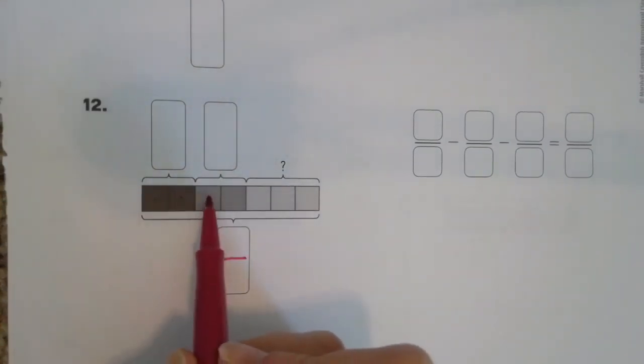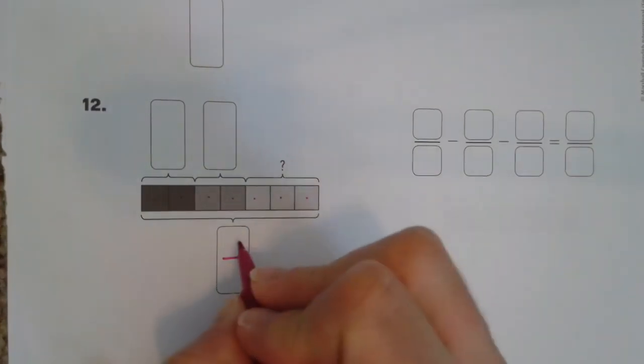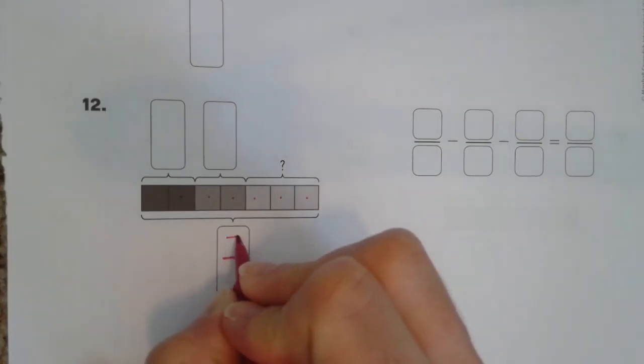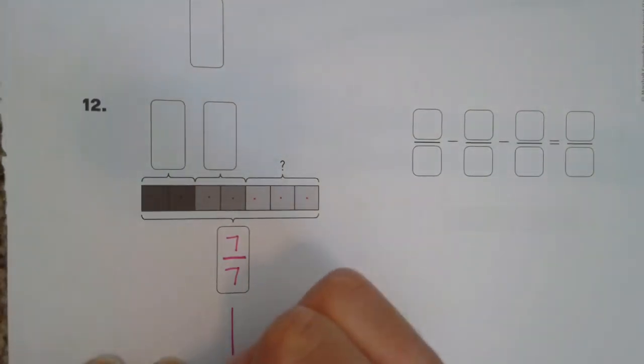So there are 1, 2, 3, 4, 5, 6, 7 parts in this whole. So the whole fraction is worth 7 sevenths, because that's the same as 1 whole.